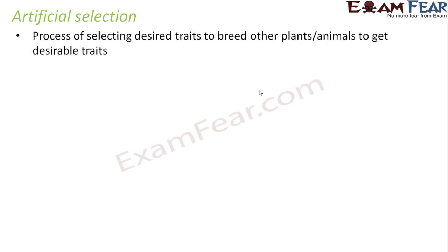Let us now talk about something called artificial selection. We already spoke about natural selection — it was a change or evolution which was supported by nature. Something which gave survival advantage to an organism was supported by nature. When I talk of artificial selection, that means it is something selected artificially by human beings. Man selects the desirable traits — man decides which trait should survive and which should not. Artificial selection is a process of selecting desired traits to breed other plants or animals to get desirable traits.